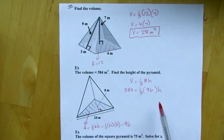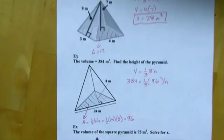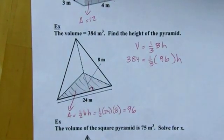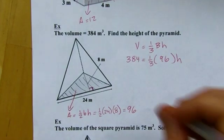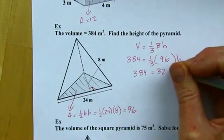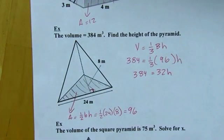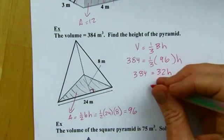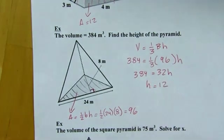So, I'm going to take one third of 96 first. You can just think of that as 96 divided by 3, which comes out to 32. And then, I'll divide by 32. And it comes out to 12.